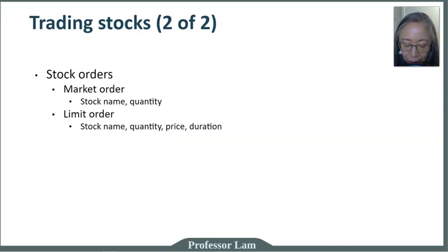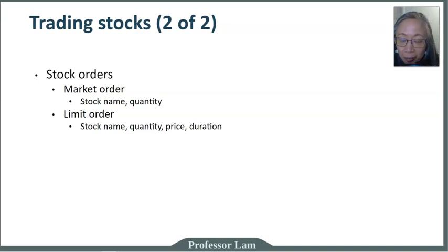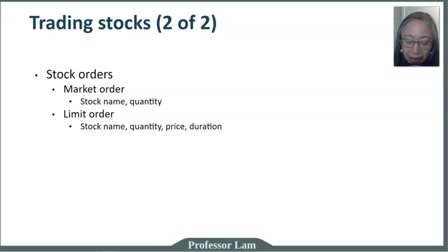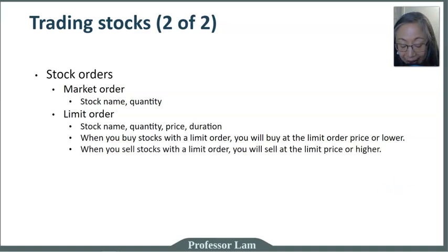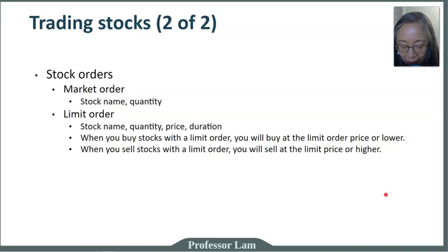A limit order limits when the order will get executed, and you also need to specify the duration — it can be good till cancel or good for the day. Good till cancel means the order remains in effect until you cancel it; good for the day means if the order is not executed today, it's automatically canceled. If you buy a stock with a limit order, your order will execute at or below the limit price. When you sell with a limit order, it executes at or higher than the limit.